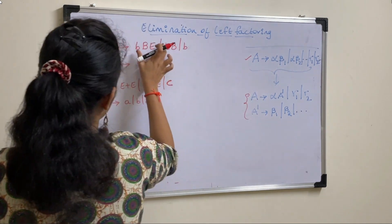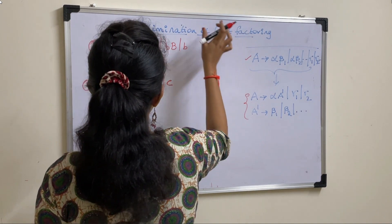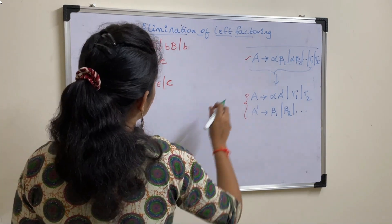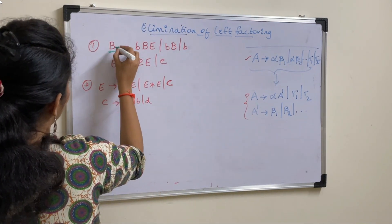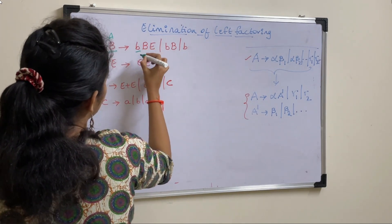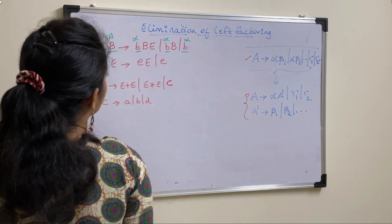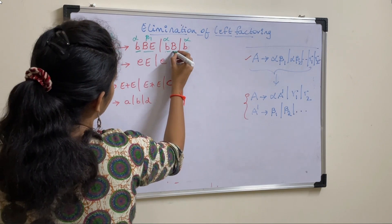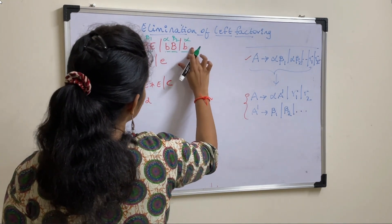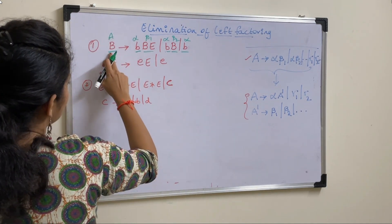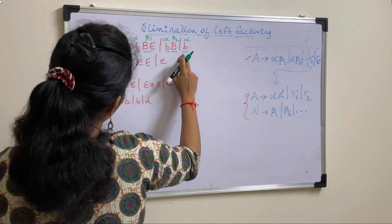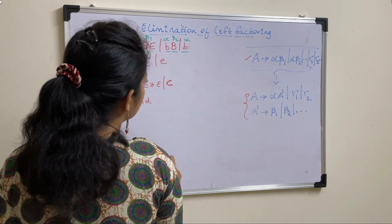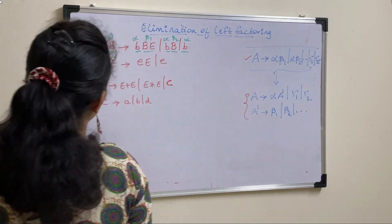We will solve left factoring with the help of examples. For the first example, check whether it is in the form A derives alpha beta1 and so on. Here B is taken as A. All the small b's are taken as alpha, and the leftover part is beta1. Here this B is beta2. There is nothing after the third production, so you can leave it. This is in the form A derives alpha beta1 or alpha beta2 or alpha. The last one is not gamma because alpha is already small b — since we have b there, it should be taken as alpha only, not gamma. If the symbol is different, then that should be taken as gamma.